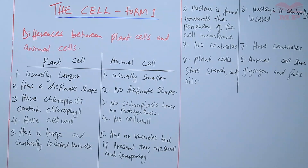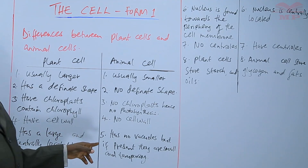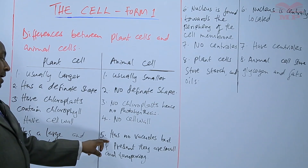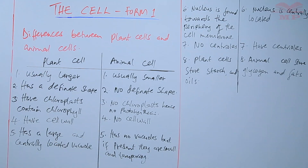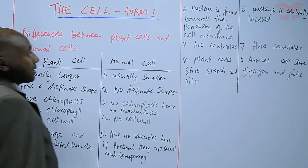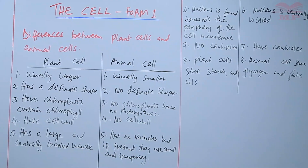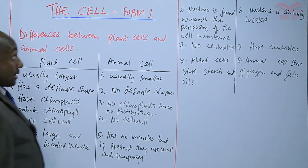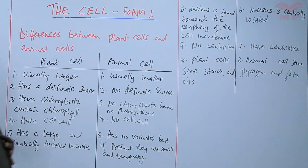Plant cells have a cell wall; animal cells have no cell wall. Plant cells have large and centrally located vacuoles; animal cells have no vacuoles, but if present they are small and temporary and do not last through the lifetime of the animal cell. The nucleus of a plant cell is found towards the periphery of the cell membrane, whereas the nucleus of an animal cell is centrally located at the center.